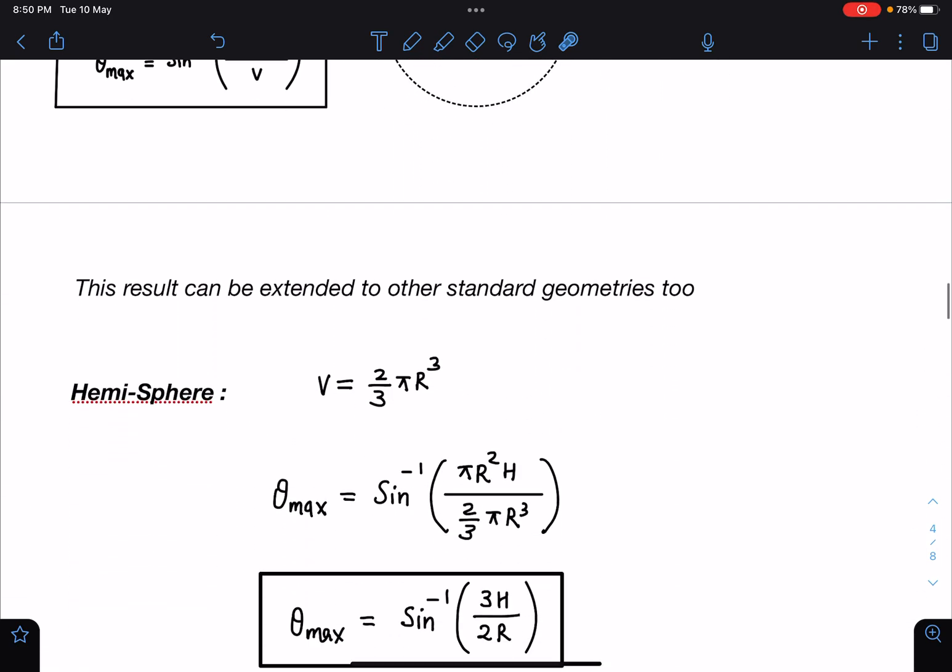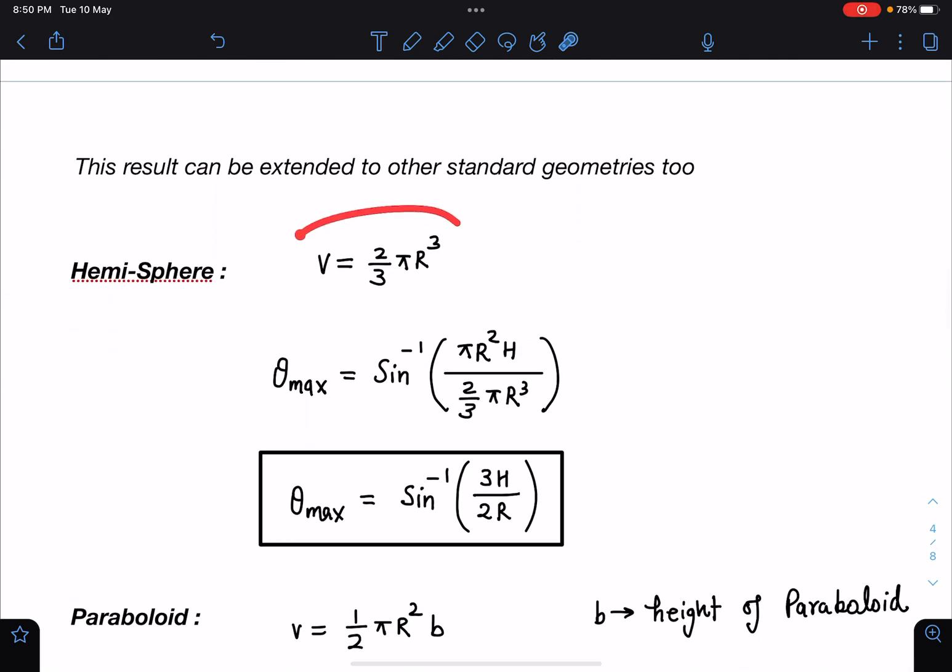So you can see here I am extending it to hemisphere. Volume I'll take 2 by 3 πr³. If I substitute here I am getting 3h by 2r.